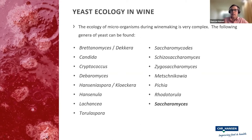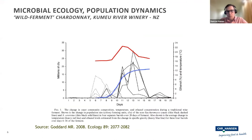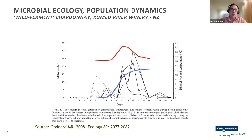However, it's always Saccharomyces cerevisiae that completes primary fermentation. To demonstrate this diverse ecology, we've used a reference from a paper by Matt Goddard — it's 14 years old but still a fundamental principle. This paper looked at uninoculated, wild-fermented Chardonnay barrels at Kumeu River winery in New Zealand. They tracked the populations of all the non-Saccharomyces strains present, and also the Saccharomyces over time.